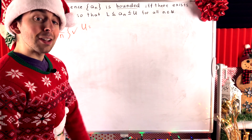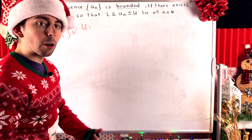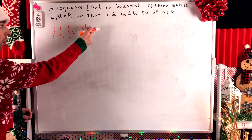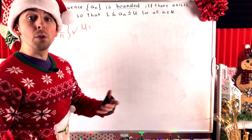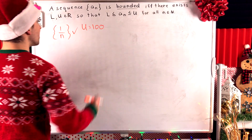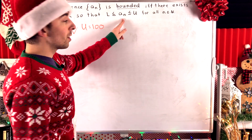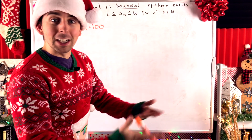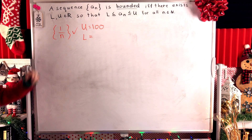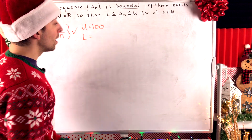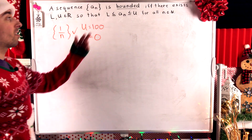This sequence of reciprocals of natural numbers is indeed bounded. The first term is one, and after that the natural numbers in the denominator get bigger and bigger, so the values of the sequence get smaller and smaller. So one would be an upper bound. To emphasize that bounds are not unique: two, three, four, five, a hundred — those are all also upper bounds. If some number is greater than or equal to every term, we can make it bigger and get more upper bounds. And certainly every term is positive, so zero is a lower bound. So this sequence is bounded.